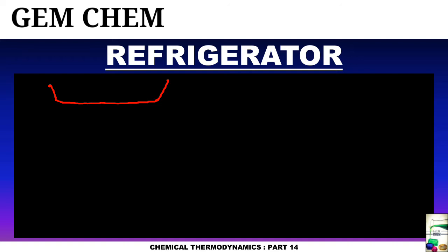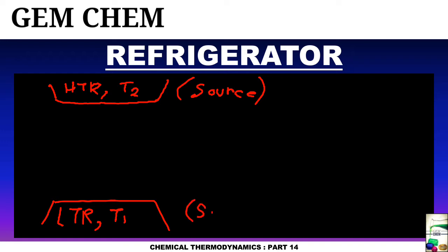So this is our high temperature reservoir with a temperature of T2, and this is our source. Similarly, the down portion is our low temperature reservoir with the temperature of T1, and this is our sink. And here we have the refrigerator R, which will do the work or take up the work.